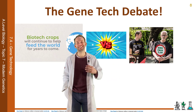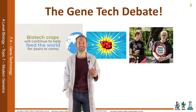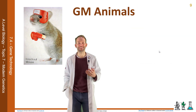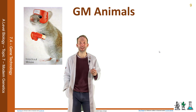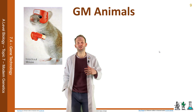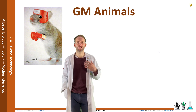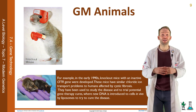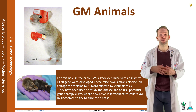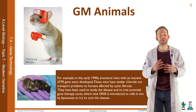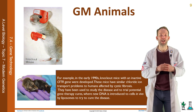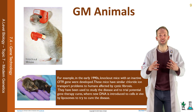Genetic modification can also be done with animals. We can create what are called knockout mice, which are animal models of disease. It's much more ethical to knock out a gene in a mouse and use it to test new treatments rather than doing it on humans. For example, in the early 1990s, knockout mice with an inactive CFTR gene were developed. These mice had similar chloride ion transport problems to humans affected by cystic fibrosis. We could then use those mice to study the disease and trial potential gene therapy cures, whereby you inject the functioning gene in vivo using liposomes to cure the disease.